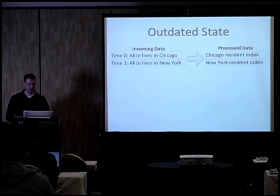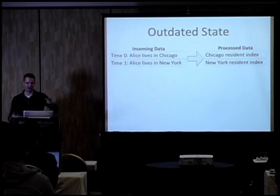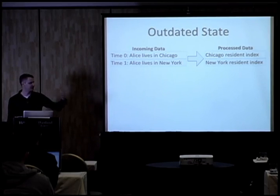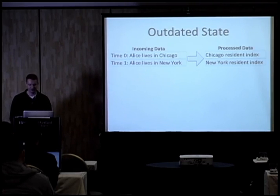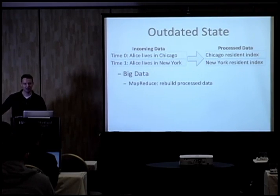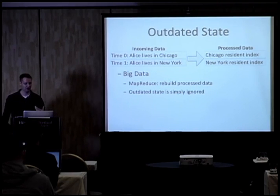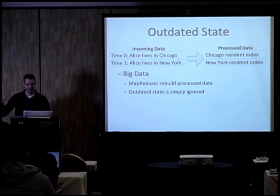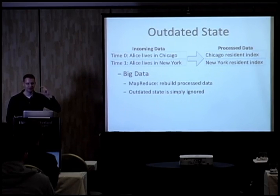The next thing I want to touch on is dealing with outdated state. Imagine we're building indexes of residents of Chicago and residents of New York. At time zero, Alice lives in Chicago and exists in that index. At time one, she lives in New York and would exist in the other index. If you're dealing with a typical big data processing model, it's straightforward — run a MapReduce job, rebuild both indexes from scratch. Outdated state is simply ignored. This is one of the big advantages of MapReduce: you can reason about large data sets very simply.